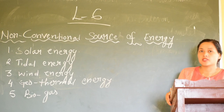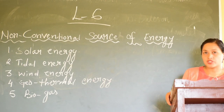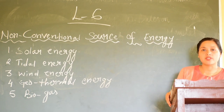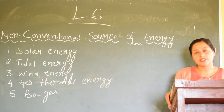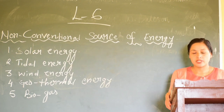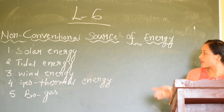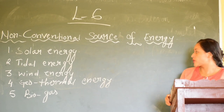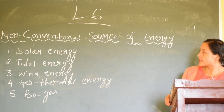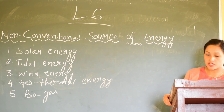Next, our topic is non-conventional source of energy. Non-conventional source of energy are those energies that are found abundantly on the earth. They are eco-friendly and they are not limited. Examples include solar energy, tidal energy, wind energy, geothermal energy, and biogas. Let me give you a little bit of definition of all those energies under non-conventional source of energy.